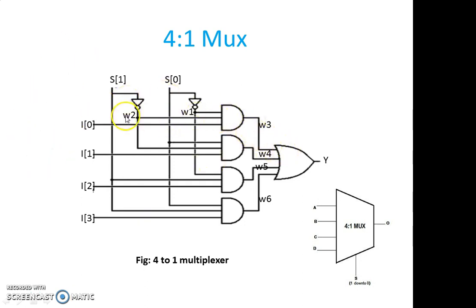The total intermediate signals required are W1, W2, W3, W4, W5 and W6. These signals are required. Now let us try to write the code for this one.